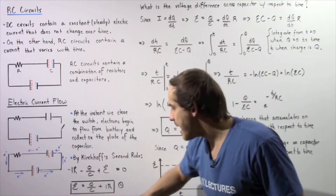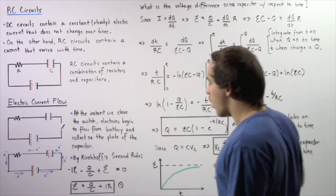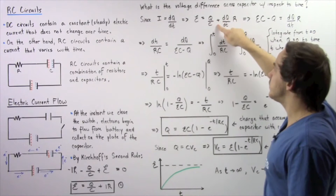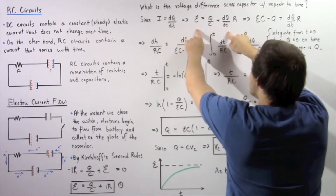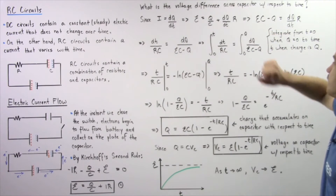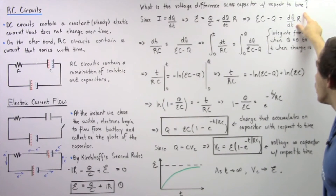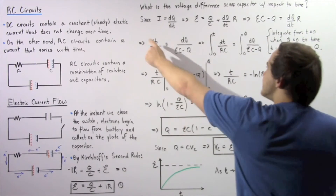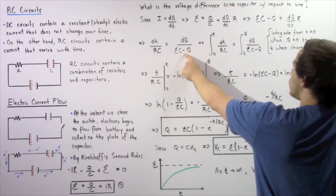R, EMF, and C are all constants, but Q and I vary with respect to time. Taking equation 1 and substituting I = dQ/dt, the EMF equals Q/C plus (dQ/dt) times R. Multiplying both sides by C and rearranging, EMF times C minus Q equals (dQ/dt) times R. Separating variables gives dT divided by RC equals dQ divided by (EMF·C minus Q).